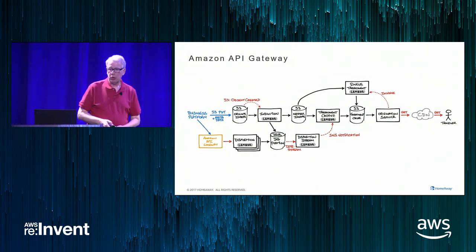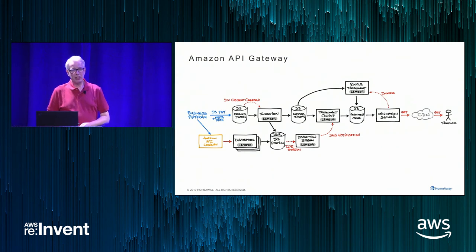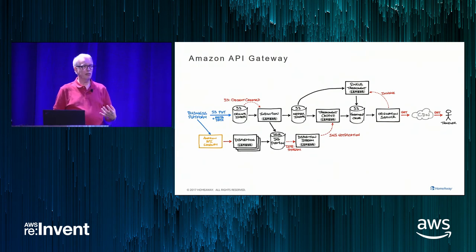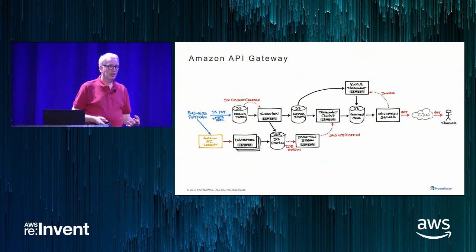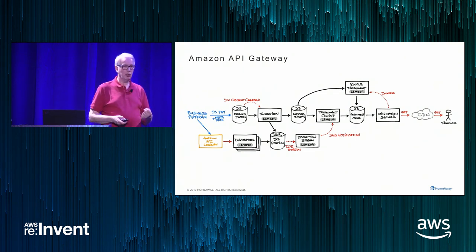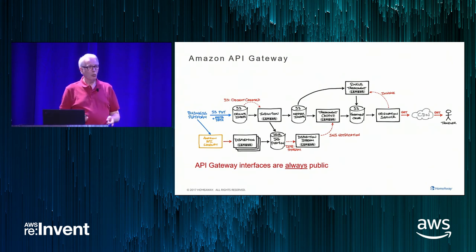Why didn't we use API Gateway? We looked at it for about 48 hours and then realized — every Amazon API Gateway function is public. Yes, it's a great way of invoking Lambdas, but if you want your Lambdas to be public. We didn't want them to be public, so we couldn't use it that way.